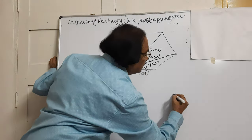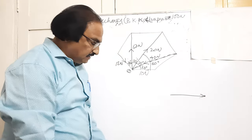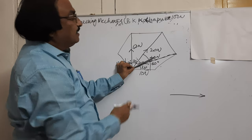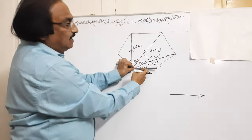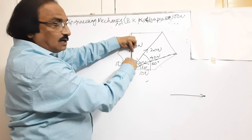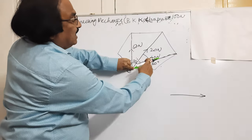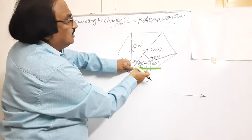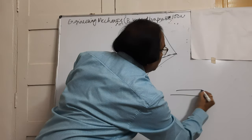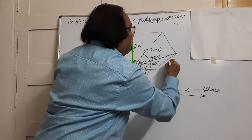Resolving the forces: The 10 Newton force acts horizontally to the right. For the 40 Newton force — arrow direction is downward — if I resolve horizontally it goes along angle 30 to the left, and vertically it goes away from 30 downward. So horizontal component is 40 cos 30 to the left, and vertical component is 40 sin 30 downward.